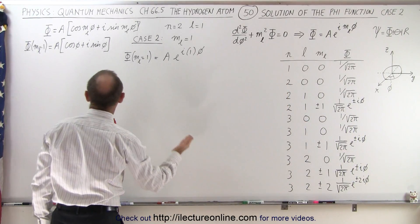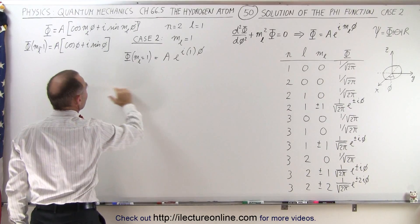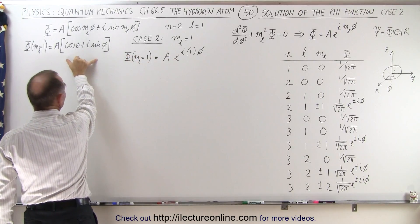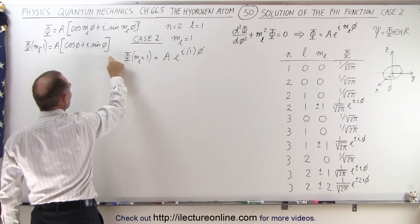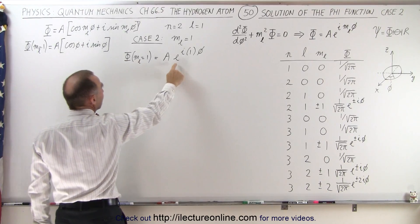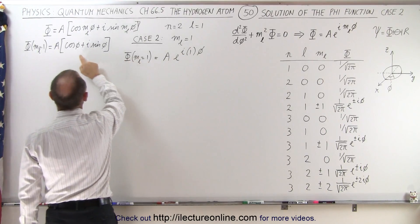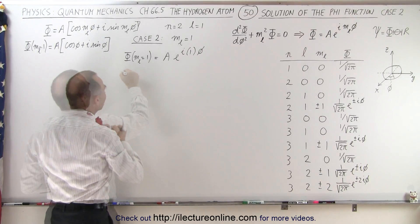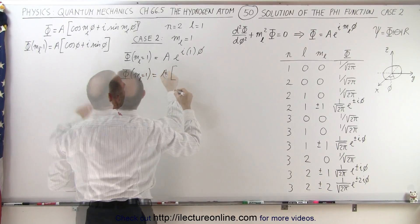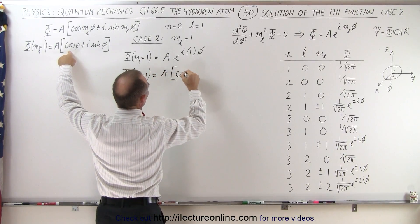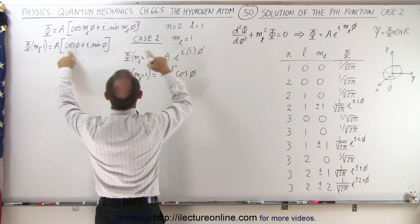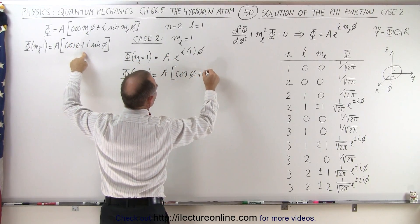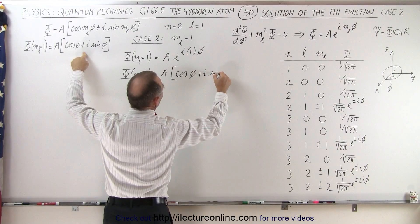How do we do that? Well, we first represent the function. Instead of doing it in the exponential form, it is easier to find the value for the constant A when we put it in this form. We know that e to the i·phi is equal to the cosine of phi plus i times the sine of phi. So we're going to write it as the cosine of phi — where m is equal to 1 — plus i times the sine of phi.